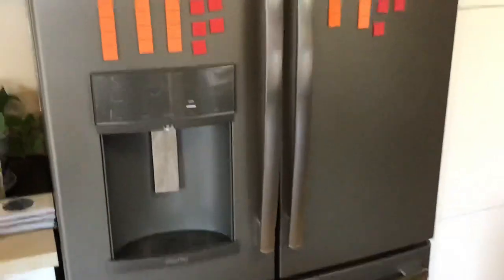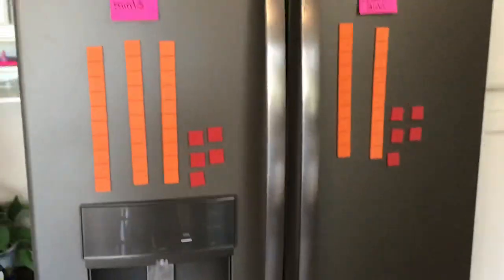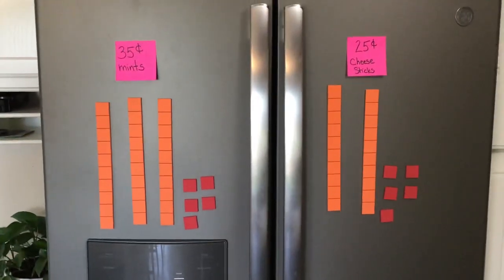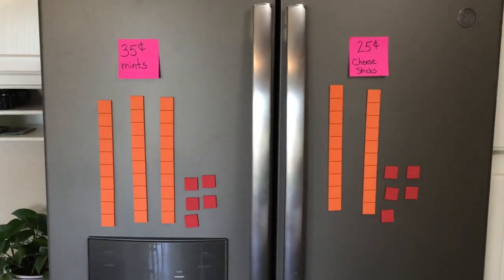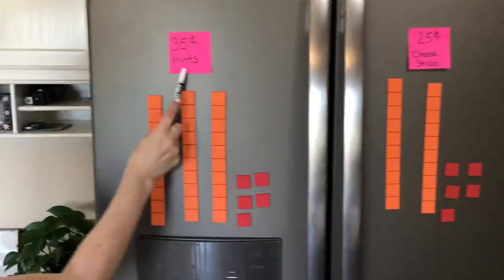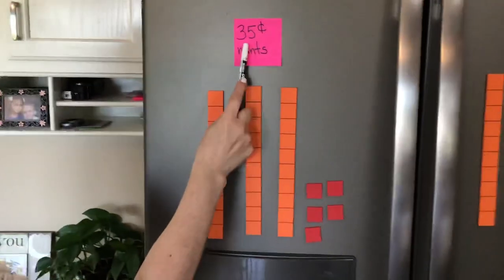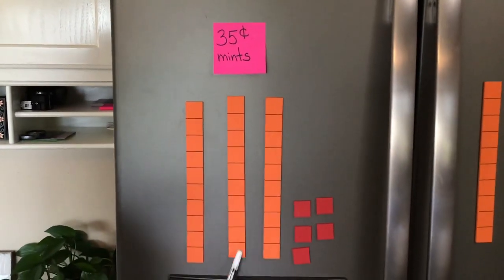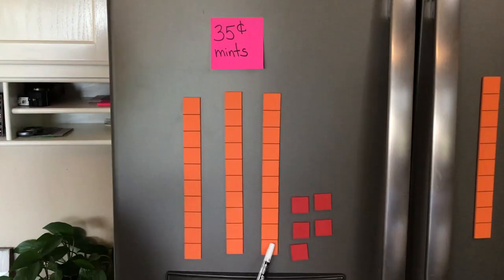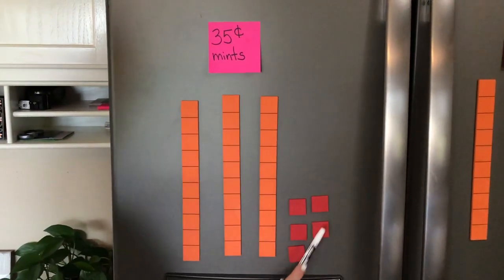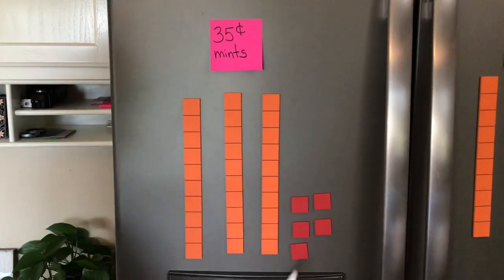Up here on my refrigerator, I put some base tens and ones to help me figure this out. My mints were $0.35, so I have $10, $20, $30, $31, $32, $33, $34, $35.